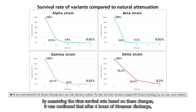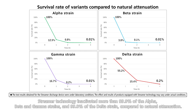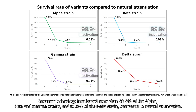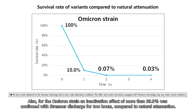By measuring the virus survival rate based on these color changes, it was confirmed that after four hours of streamer discharge, streamer technology inactivated more than 99.9% of the alpha, beta, and gamma strains, and 99.8% of the delta strain compared to natural attenuation. For the omicron strain, an inactivation effect of more than 99.9% was confirmed with streamer discharge for two hours compared to natural attenuation.